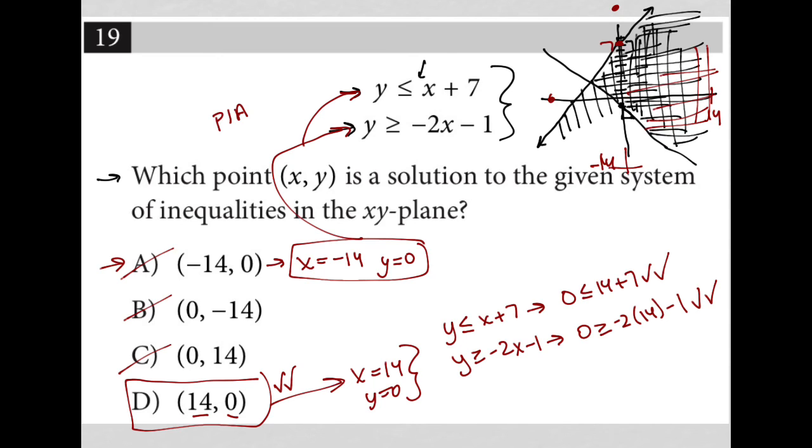So choice D should be the only one that gives me a true statement by plugging both the x and y into both inequalities. I think these are both equally fast, probably. I like the visual better. That's just my own personal preference, but plug-in answers would also work here as a great strategy.